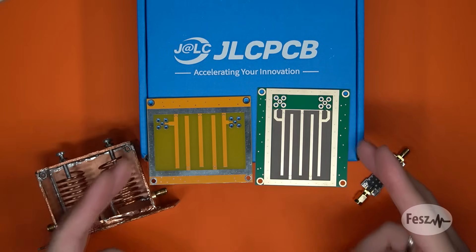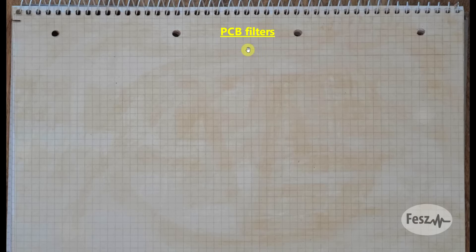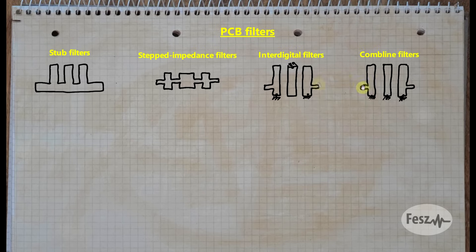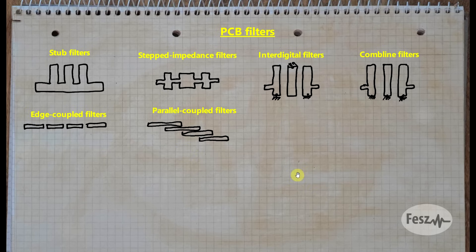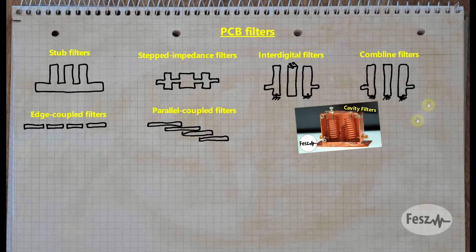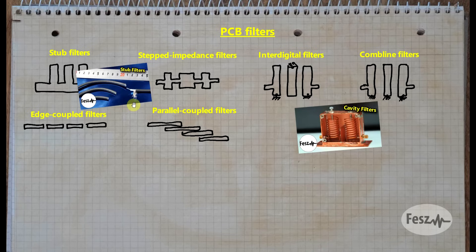So let's first look at why you would go with PCB-based filters. These fall into the distributed element filter category, and there are a few common implementations: stub filters, stepped impedance filters, interdigital and comb line filters, edge-coupled filters, and parallel-coupled filters. These are not all of the filter types, of course, but rather the main representatives. Things like edge-coupled and parallel-coupled filters can be quite difficult to construct without a PCB.